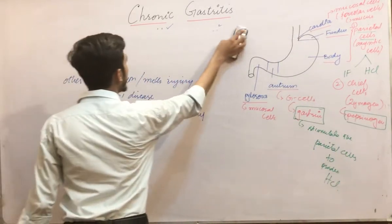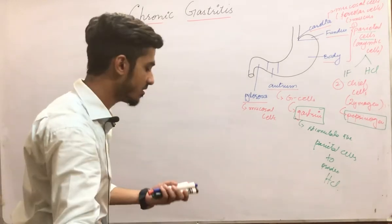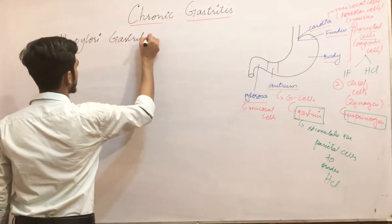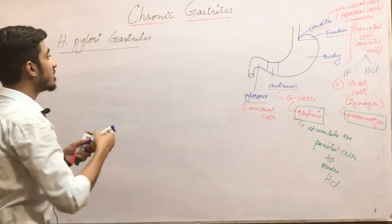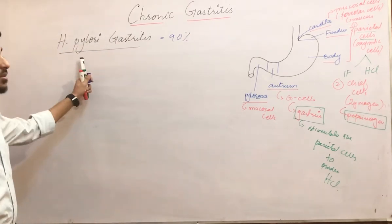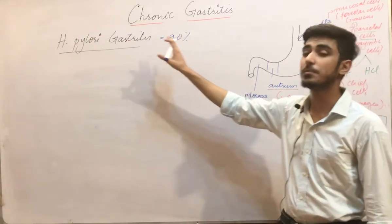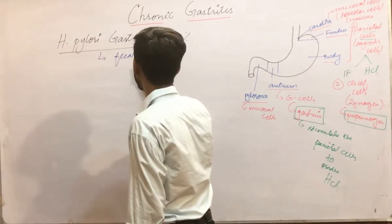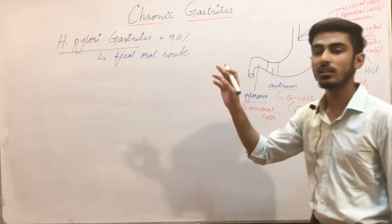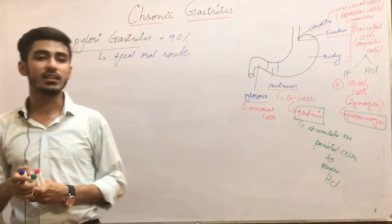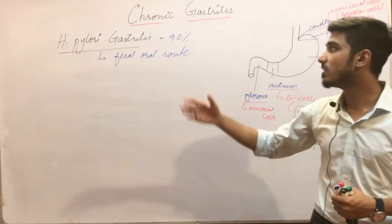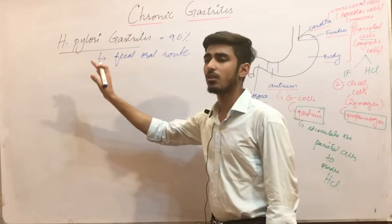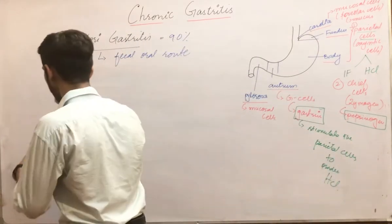Now moving on towards the first and most common cause — H. pylori. We will be studying H. pylori associated gastritis. H. pylori is involved in 90% of cases of chronic gastritis. It is transferred basically by the fecal-oral route. H. pylori is simply a bacteria — a bacillus — which we have also studied in microbiology.